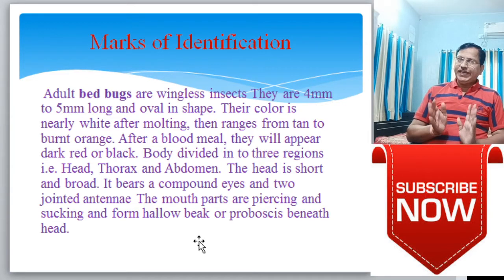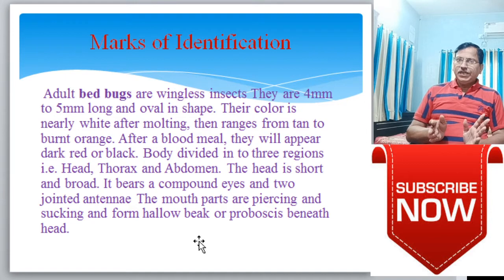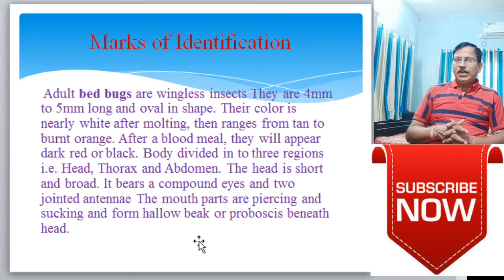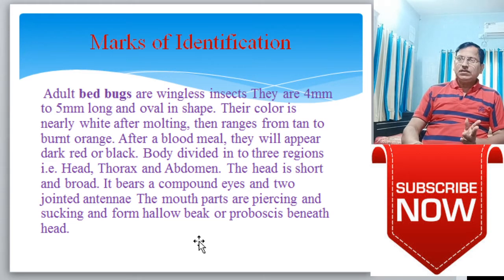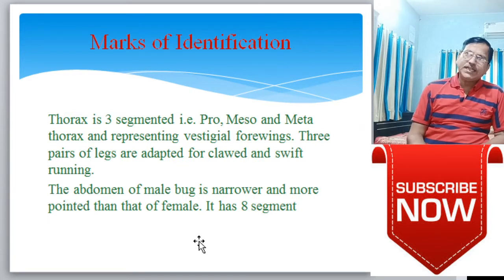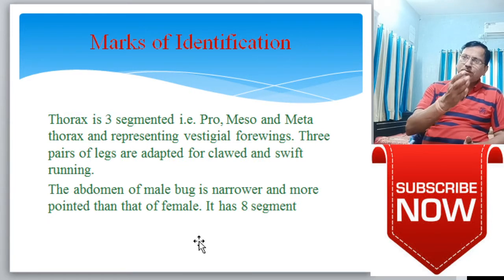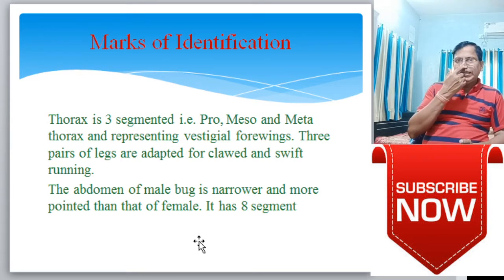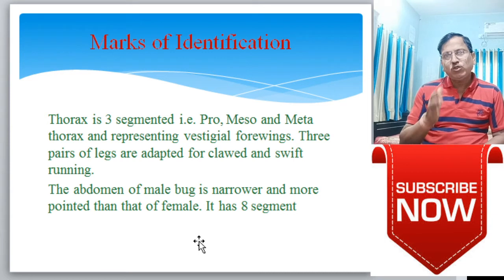The body is divided into three regions, as is characteristic of class Insecta: head, thorax, and abdomen. The head is short and broad; it bears compound eyes and two-jointed antennae. The mouthparts are piercing and sucking, and form a hollow beak or proboscis beneath the head. So this animal has piercing and blood-sucking type mouthparts.